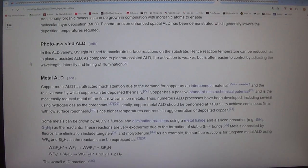Photo assisted ALD. In this ALD variety, UV light is used to accelerate surface reactions from the substrate. Hence reaction temperature can be reduced, as in plasma assisted ALD. As compared to plasma assisted ALD, the activation is weaker, but is often easier to control by adjusting the wavelength, intensity and timing of illumination.